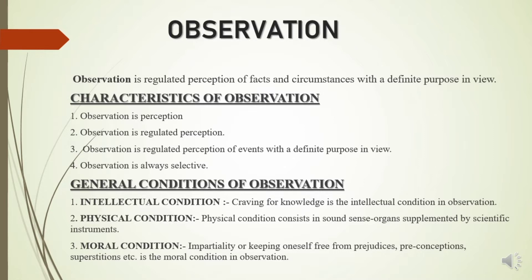The second characteristic is that observation is regulated perception. In observation, our sense organs come in contact with various things and events and we get knowledge directly. A casual or careless perception cannot be observation. There must be a definite purpose behind our perception. So, observation is a regulated perception.